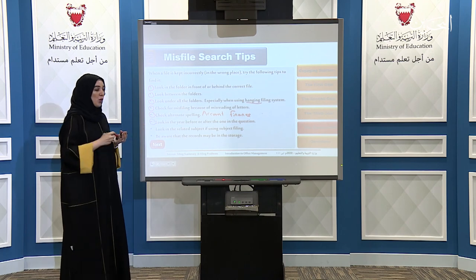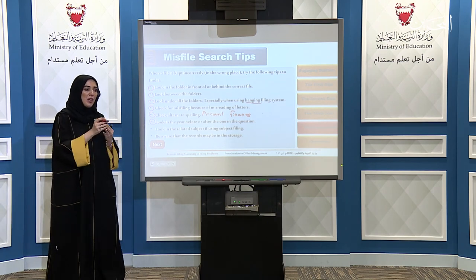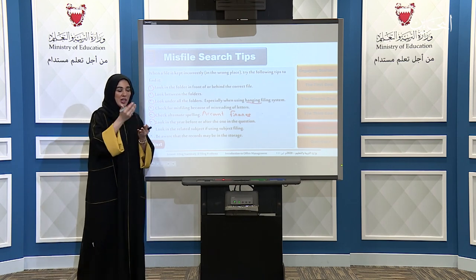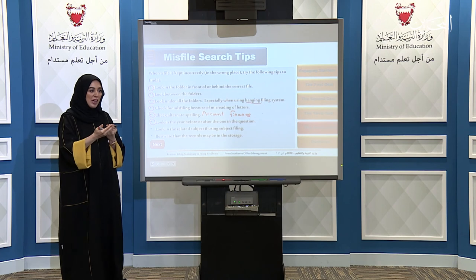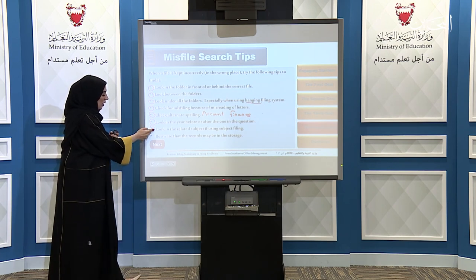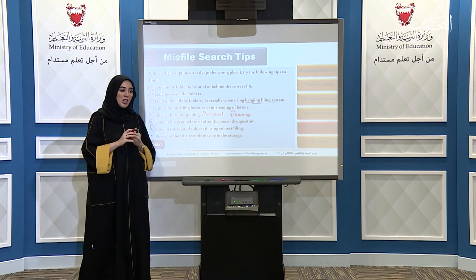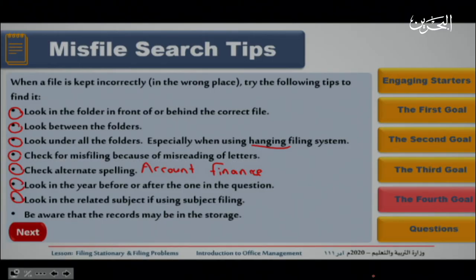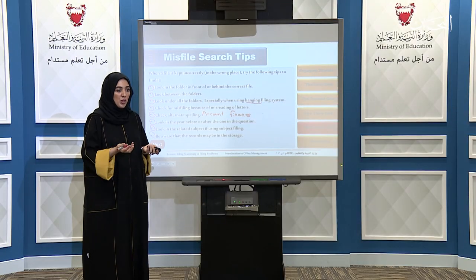Sixth, look in the year before or after the one in question — if the document is from 2018, look in 2017 or 2019 as well. Seventh, look in the related subject if using subject filing. Eighth, be aware that the records may be in storage, or it may be a dead file no longer needed — so check storage before wasting time searching elsewhere.